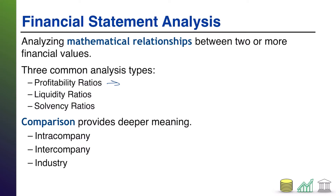Profitability ratios are those that essentially tell you how much did the company earn. Profitability ratios tend to be related to the income statement, because the income statement tells you about the revenues and expenses, or the profit of the company. So these tend to be income statement related ratios.